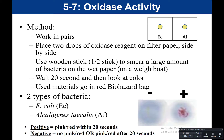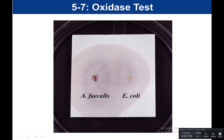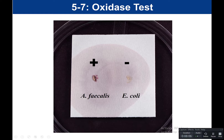This is what our oxidase test looks like. Alkaligenes faecalis shows a pink-red color and is the positive, while E. coli does not show a color change and is the negative. To summarize: no pH indicator is used; the substrate is oxygen, testing if it's the final electron acceptor; the enzyme is cytochrome C oxidase; the product is water; the reagent is called the oxidase reagent; the positive is pink-red within 20 seconds; and negative is no color change, or pink-red appearing after 20 seconds.